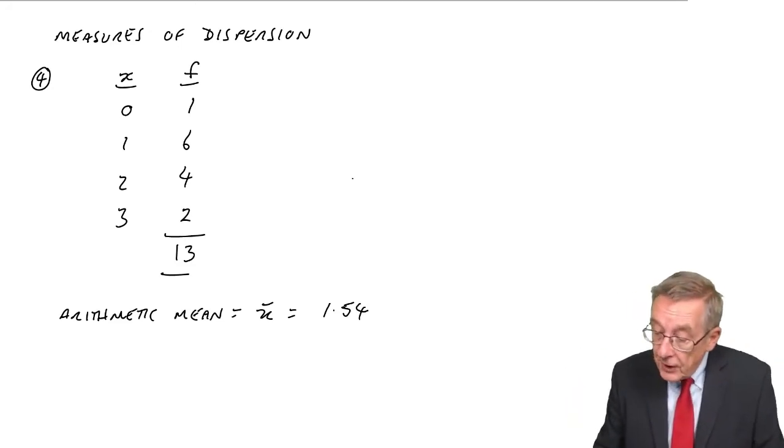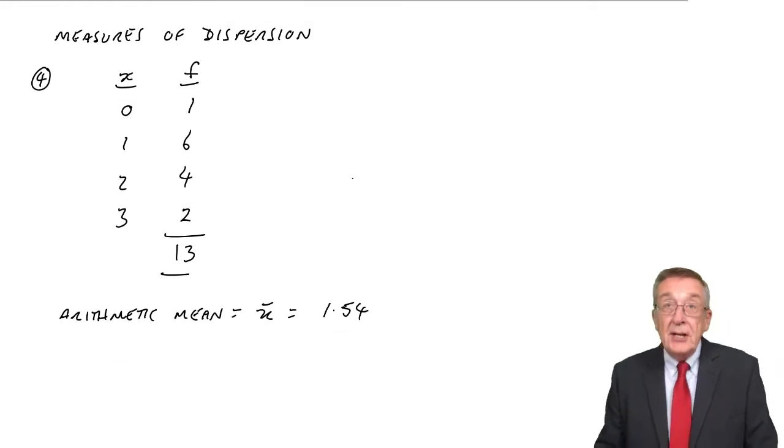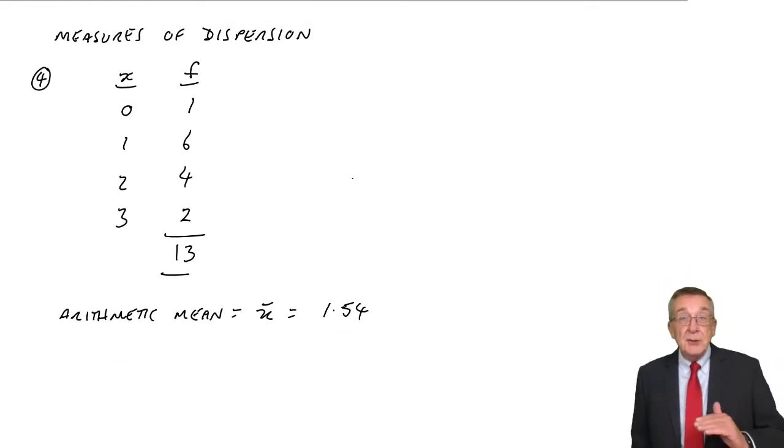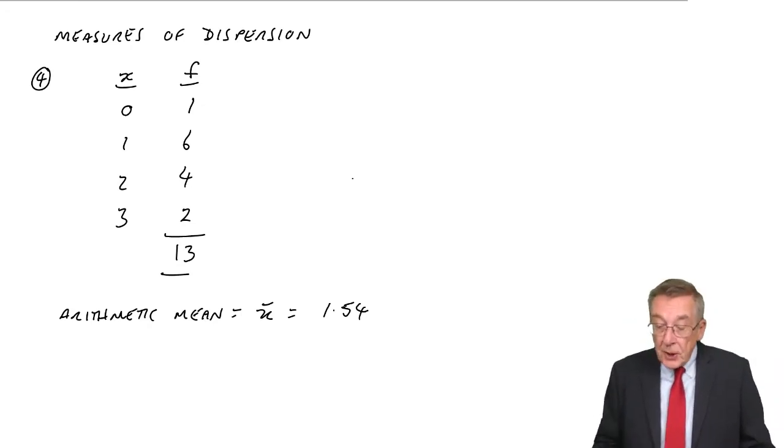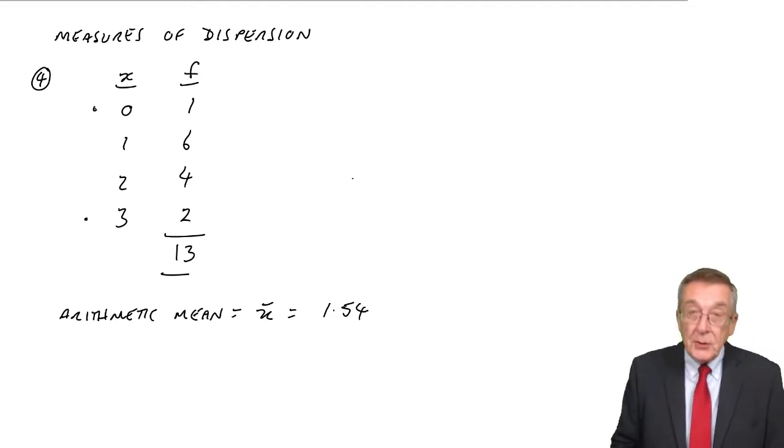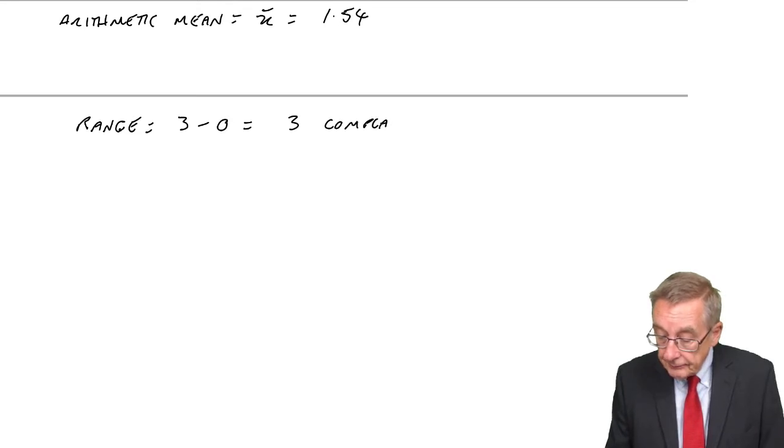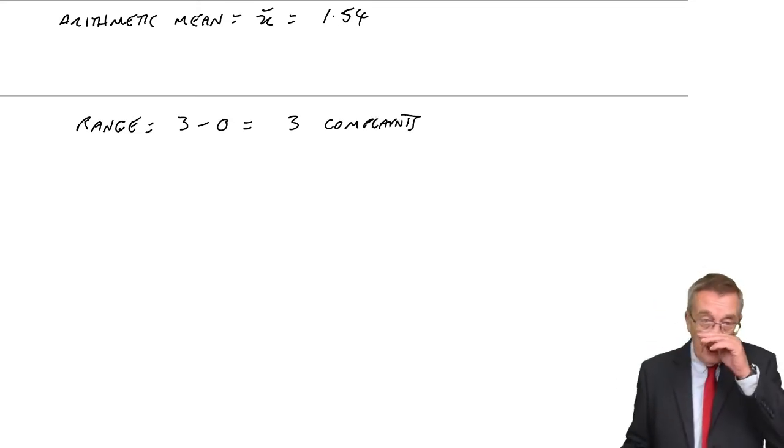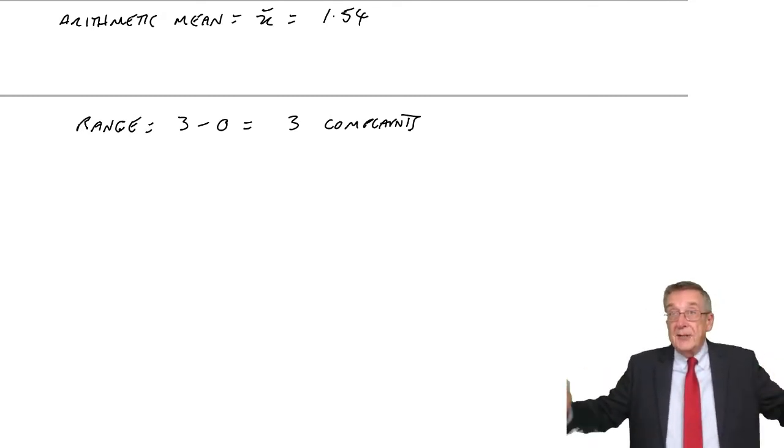And the easiest, the most obvious measure is the range. I won't write down the definition because it's in the notes. But the range is simply the difference between the highest observation and the lowest. So here, the highest observation was 3 complaints. The lowest was 0. And so the range, the difference between the two, is 3 complaints. Now that's fine, it's a very obvious measure. The bigger the range, the bigger the spread is of the observations.